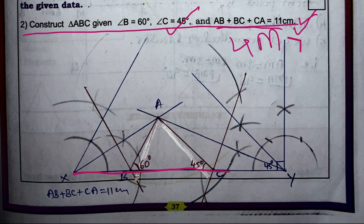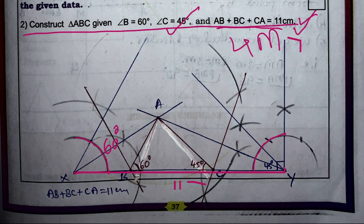First, draw a line XY = 11 cm. At X, construct a 60° angle. At Y, construct a 90° angle and bisect it to get 45°. Bisect the 60° angle to get 30° at X. The bisector of the 45° at Y and the bisector at X will meet at a point called A.